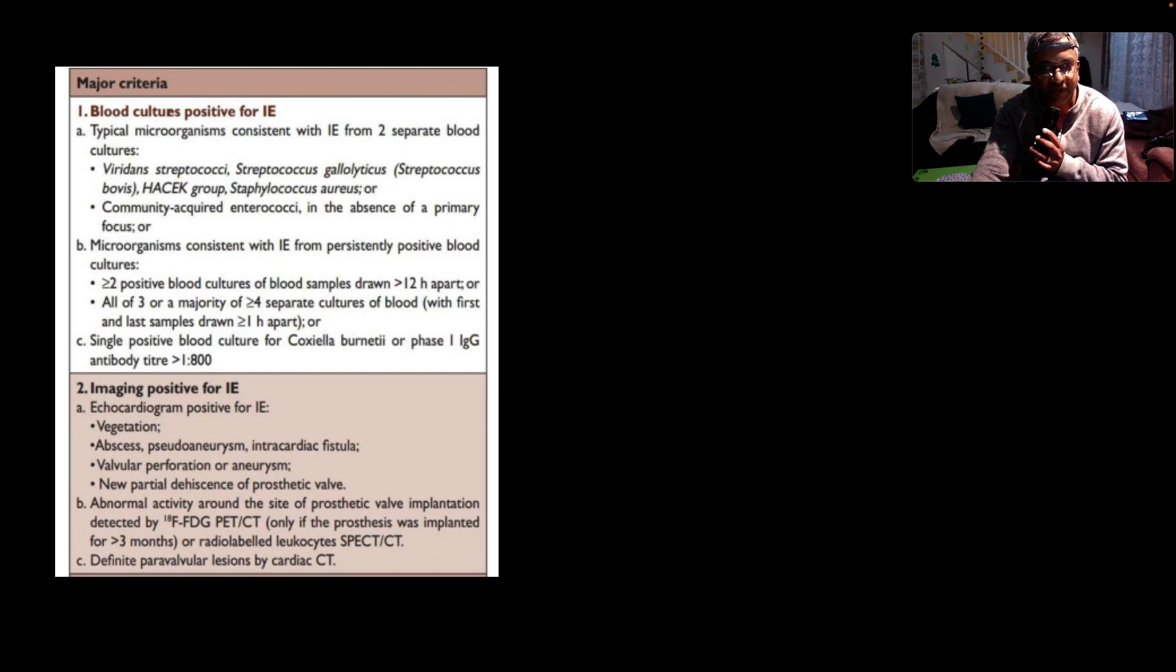When we speak about major criteria, we're basically looking at imaging and blood culture. Blood culture positive for endocarditis with typical microorganisms consistent with infective endocarditis from two separate cultures showing Viridans Strep, Strep Gallolyticus which is Strep Bovis, the HACEK group which is Haemophilus, Actinobacillus, Cardiobacterium, Eikenella, and Kingella, Strep Aureus, or community acquired Enterococci in the absence of a primary focus.